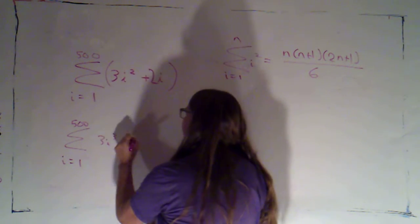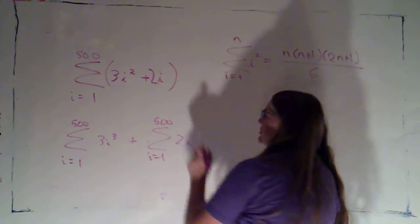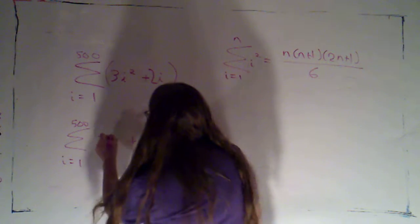Now, first thing I'm going to do is split this up into two sums. I'm going to say it's the sum of the three i squareds plus the sum as i goes from one to five hundred of two i. So now, whoops, that was i squared.